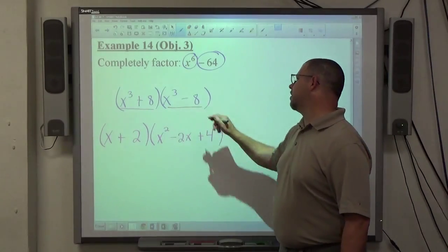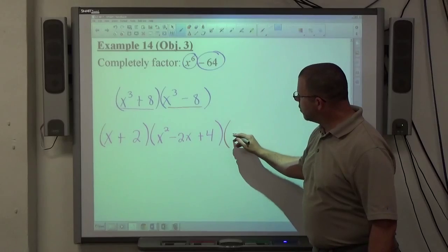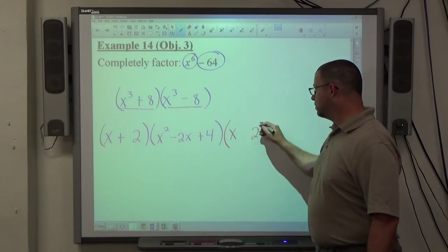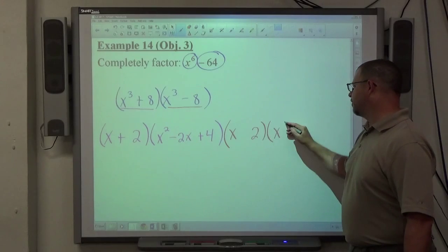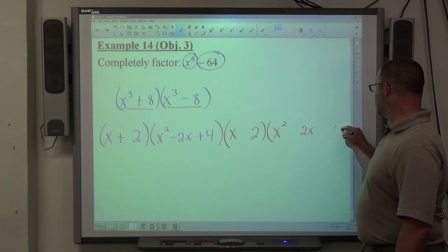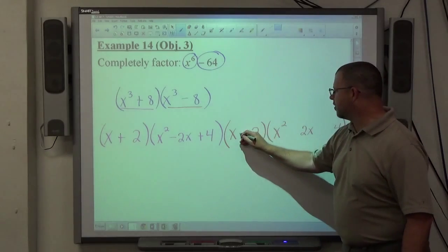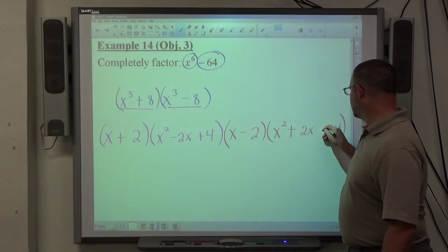The second object, X cubed minus 8, we're going to do X minus 2. So the cube root of X cubed is X, and the cube root of 8 is 2. And we're going to square the first, multiply them together, square the second. And we get the same sign minus, opposite sign plus.